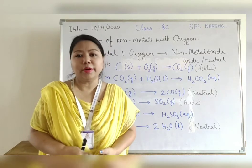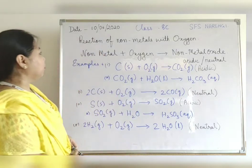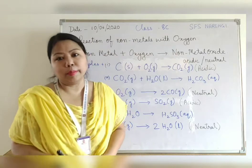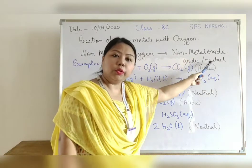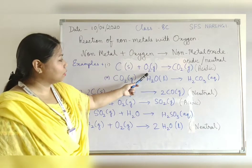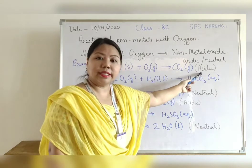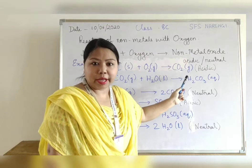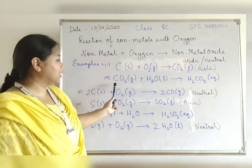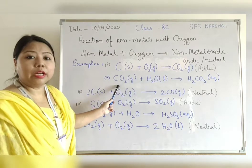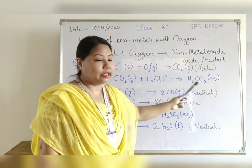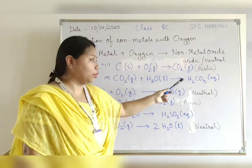Now let's understand how non-metals react with oxygen and water. Non-metals react with oxygen to produce non-metal oxide, and the non-metal oxide can be acidic or neutral in nature. Carbon is a non-metal that reacts with oxygen to produce carbon dioxide, which is acidic in nature. When the acidic non-metal oxide carbon dioxide reacts with water, it produces carbonic acid.